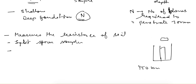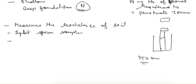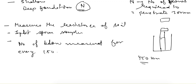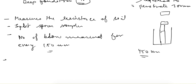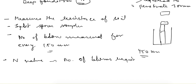We keep applying hammer blows until we reach a depth of 450 mm. The number of blows is measured for every 150 mm of penetration. The N value we are trying to find is the number of blows required for the last 300 mm of penetration.